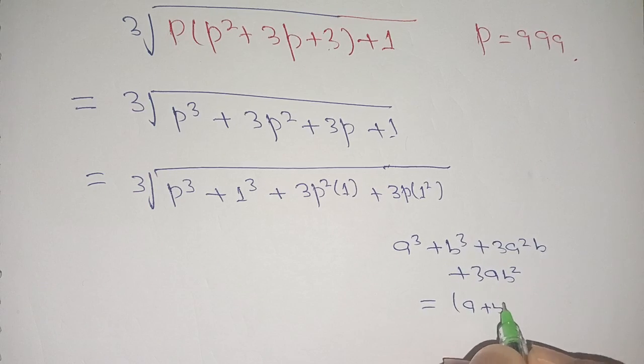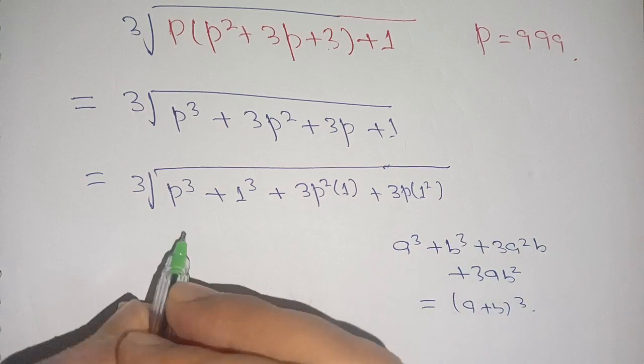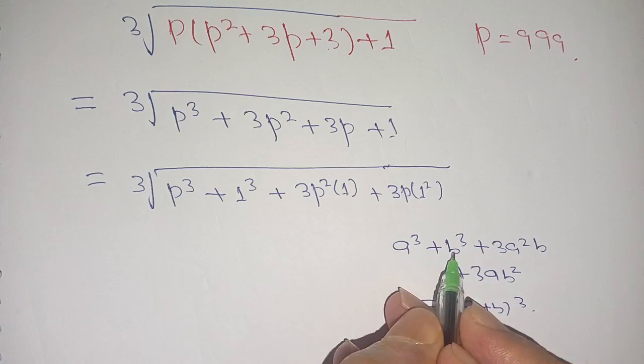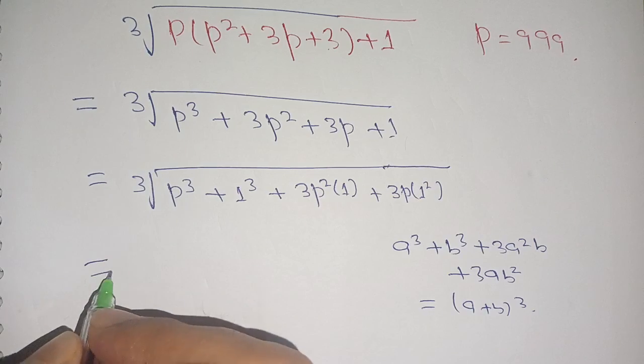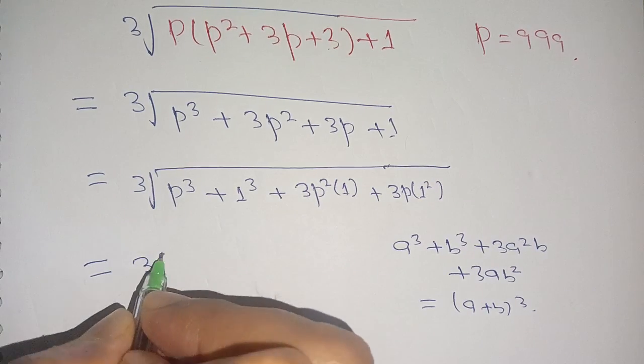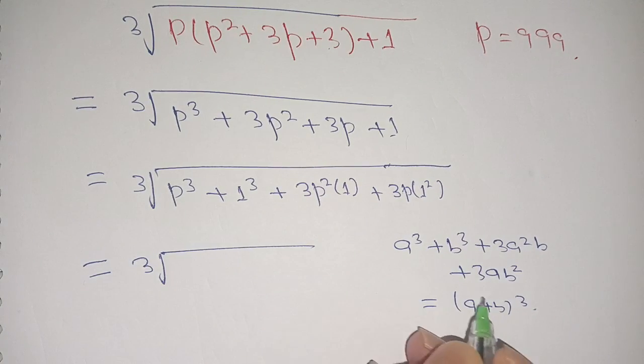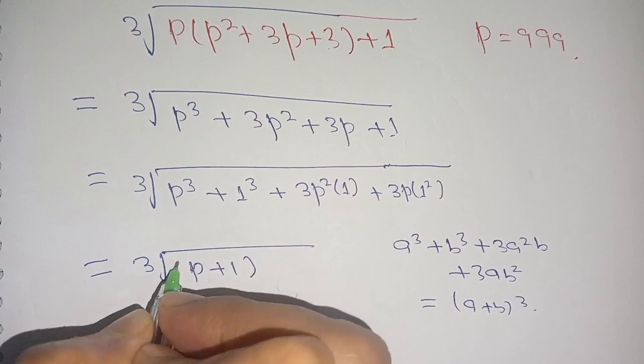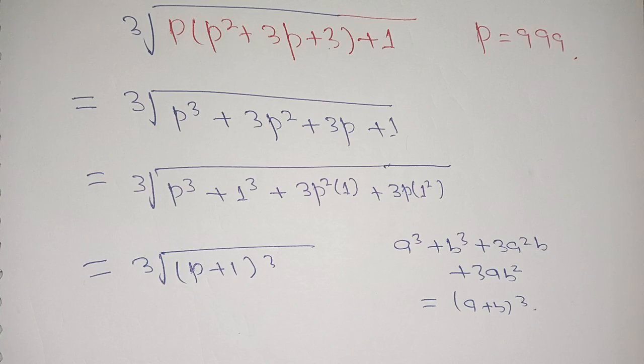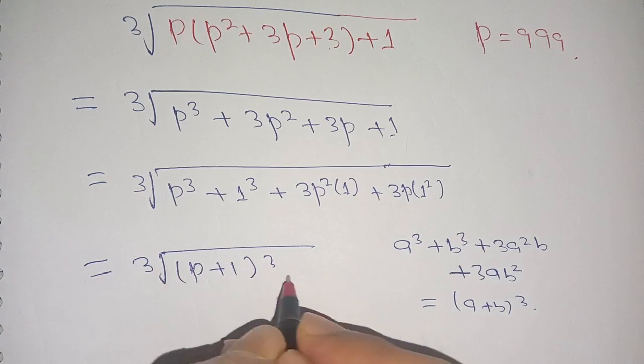Here a is p and b is 1. Now we apply this identity. We get cube root of (p + 1)³. Now we can cancel out this cube by cube root, and remaining is p + 1.